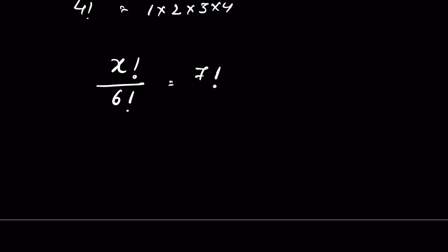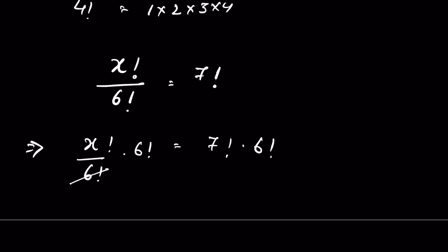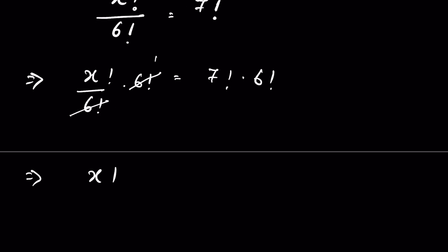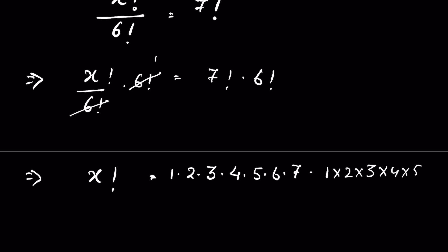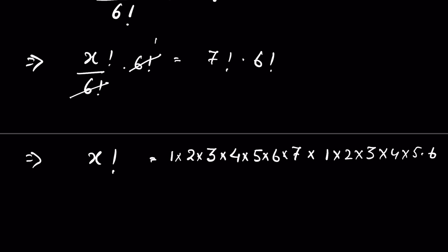We have x factorial upon 6 factorial equals 7 factorial. Let's multiply both sides by 6 factorial, so the 6 factorial cancels. x factorial is equal to 7 factorial times 6 factorial. Now, 7 factorial means 1 times 2 times 3 times 4 times 5 times 6 times 7, and 6 factorial means 1 times 2 times 3 times 4 times 5 times 6.